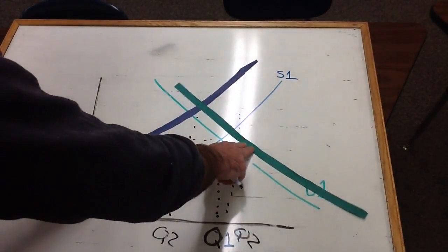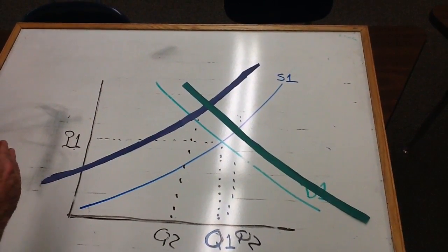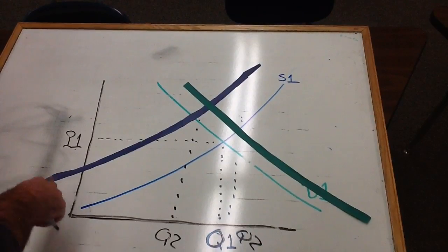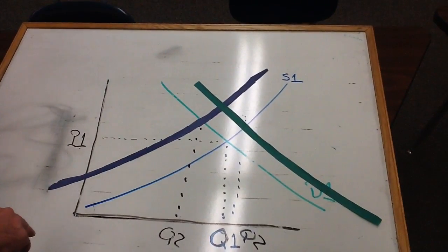Alright, so the general rule of thumb is, if the lines shift in the same direction, price is indeterminate. If they shift in opposite directions, quantity is indeterminate.